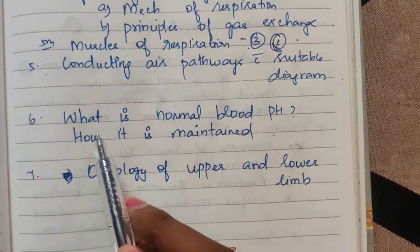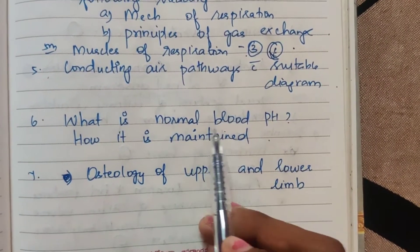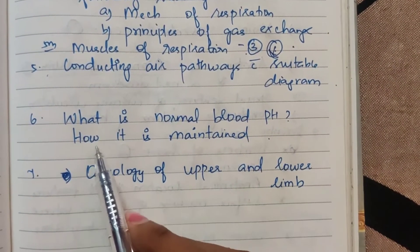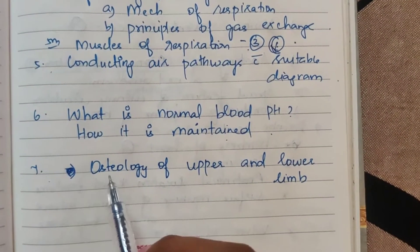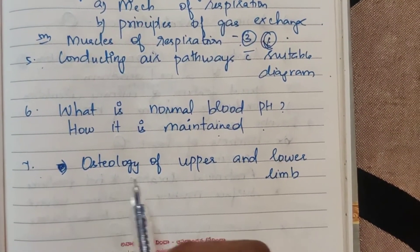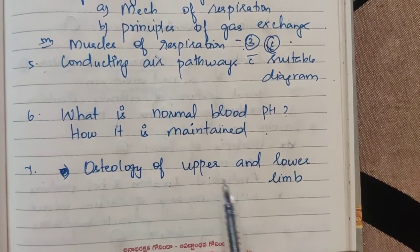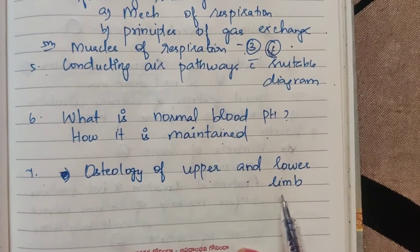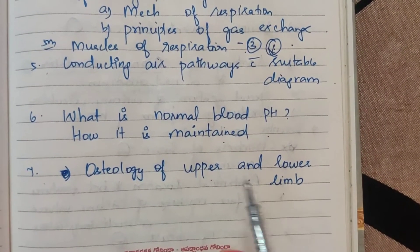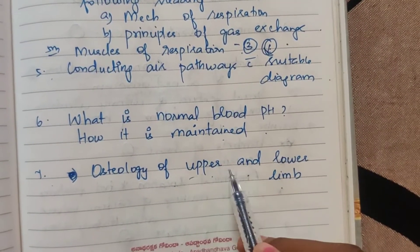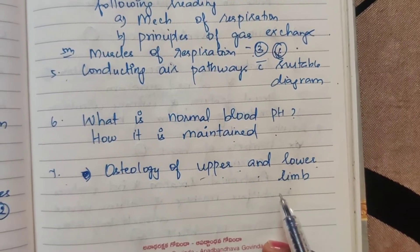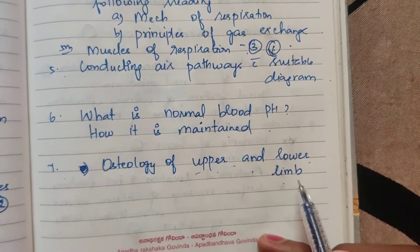Sixth one: what is normal blood pH and how is it maintained? Seventh one: osteology of upper and lower limbs — upper limbs, lower limbs, and legs.